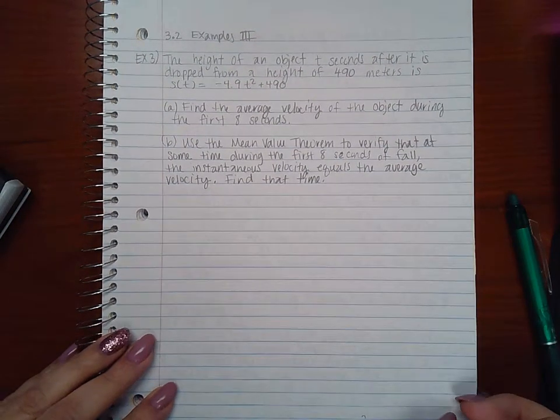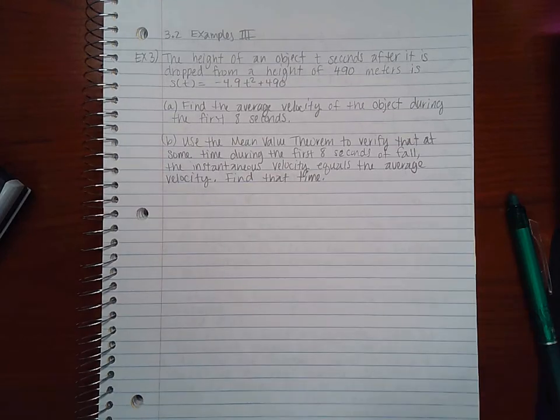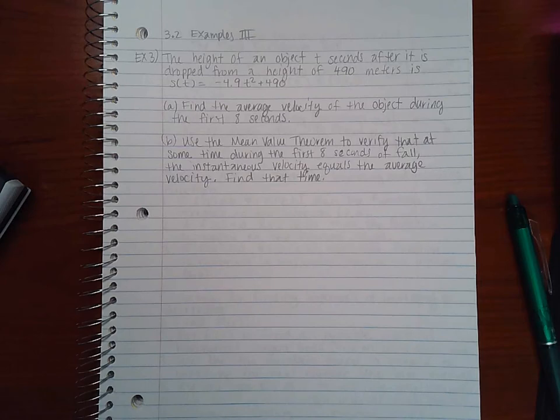Okay, this is 3.2 Examples Part 3. This example says the height of an object t seconds after it is dropped from a height of 400 meters is s(t) = -4.9t² + 490. Part (a) find the average velocity of the object during the first 8 seconds, and part (b) use the mean value theorem to verify that at some time during the first 8 seconds of fall, the instantaneous velocity equals the average velocity.